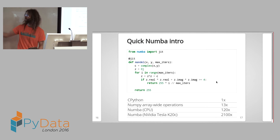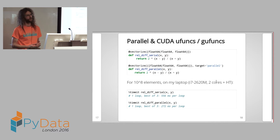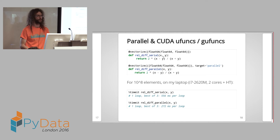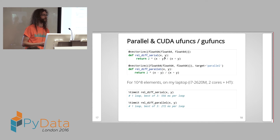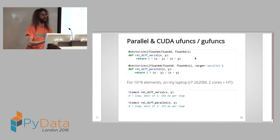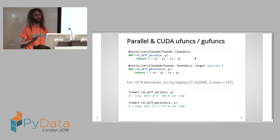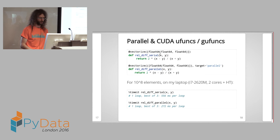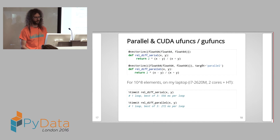The other way to use Numba is the vectorized decorator. What vectorized does is take a function you write in Python that operates on scalars and compile it down to a function automatically applied element-wise to arrays — called a universal function or ufunc. New here is the ability to generate ufuncs with a vectorized decorator that automatically execute in parallel or on a CUDA GPU, by using the target argument: target equals parallel, or target equals CUDA.